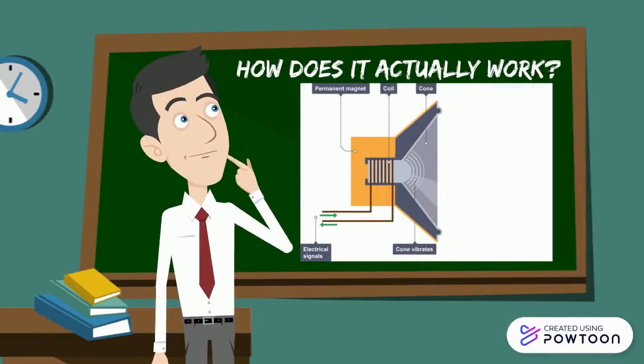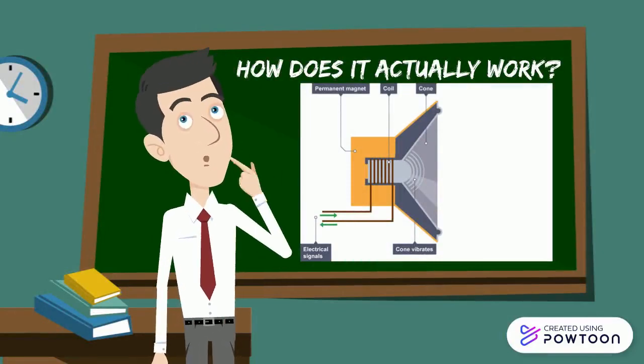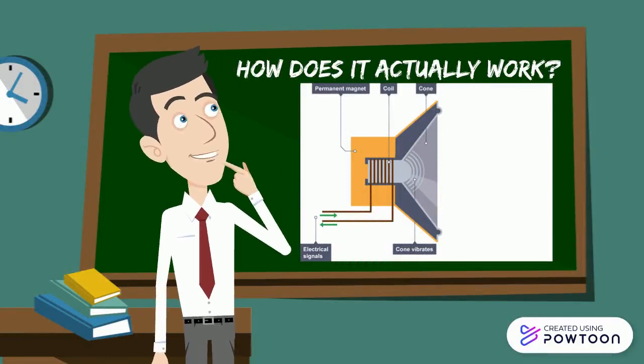Firstly, current in the coil creates an electromagnetic field. Next, the electromagnetic field interacts with the permanent magnet generating a force, which pushes the cone outwards.